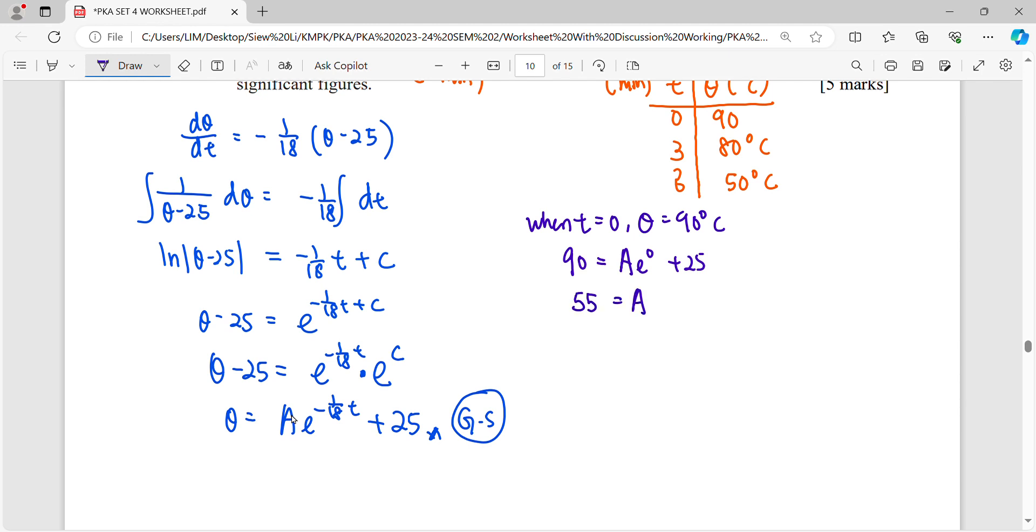65. E to the power of 0 is 1. 90 minus 25, 65. So A is 65. Then our particular solution coming out. Theta is equal to 65 e power of negative 1 over 18 t plus 25.